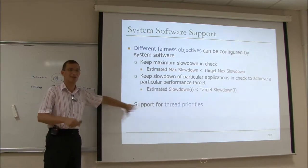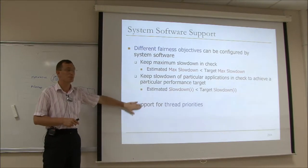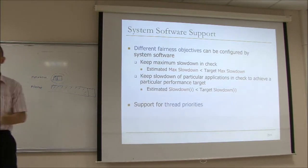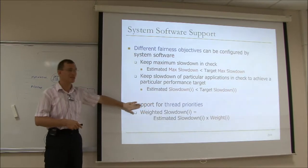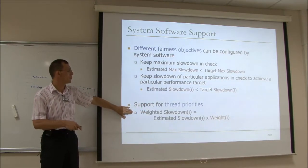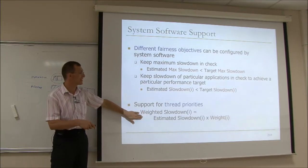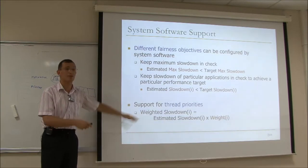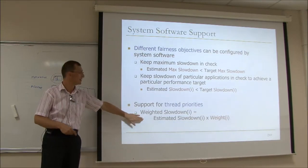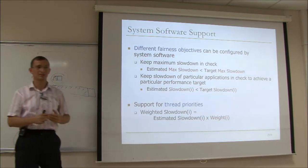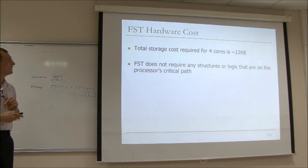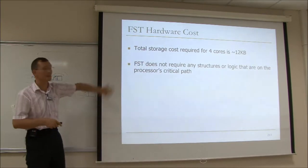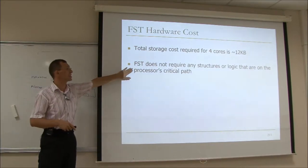There's also support for thread priorities. Each thread can have a weight, and instead of using estimated slowdowns directly, we weight that slowdown. If a thread has a huge weight, its estimated slowdown will appear much larger than other threads, and it gets appropriately prioritized. The total hardware storage cost is approximately 12 kilobytes for four cores — not costly in terms of storage — and it doesn't require any structures on the processor's critical path. The downside is implementation complexity, as many parts of the system need to track these counters.